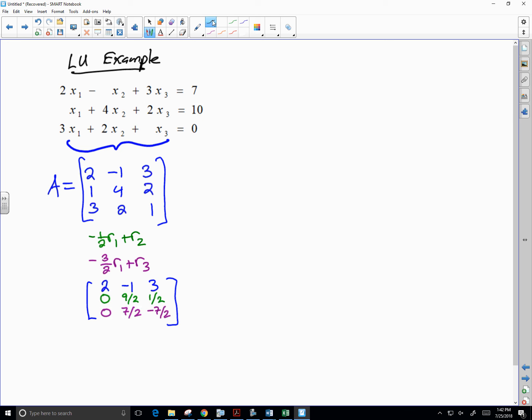So this is the process that gets us to the factor U. What we need to do is start building our factor L, which is going to be lower triangular. So we know that we're going to have zeros above the main diagonal.